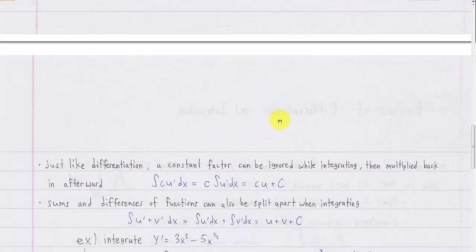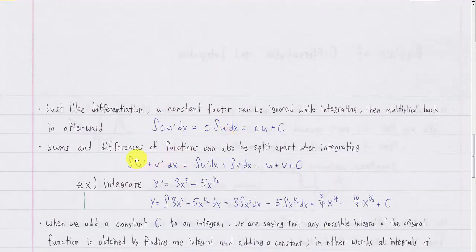Some of these properties also apply to integration. If you have a constant coefficient in front of your function, you can move it out and ignore it while integrating, then multiply it back in later — just like differentiation. And if you have the integral of the sum or difference of two or more functions, you can split it into the individual integrals of each function. For example, integrating 3x cubed minus 5x to the 1/2 power: first split the integrals, move the constants outside, integrate the powers of x, multiply the constants back in, and add C at the end.